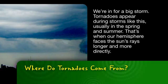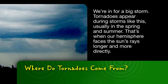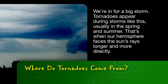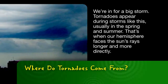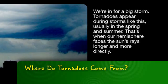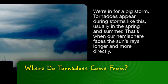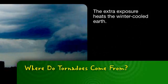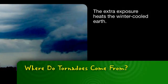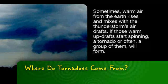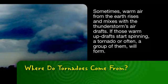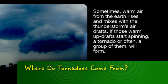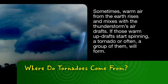Tornadoes appear during storms like this, usually in the spring and summer. That's when our hemisphere faces the sun's rays longer and more directly. The extra exposure heats the winter-cooled Earth. Sometimes warm air from the Earth rises and mixes with the thunderstorm's air drafts.